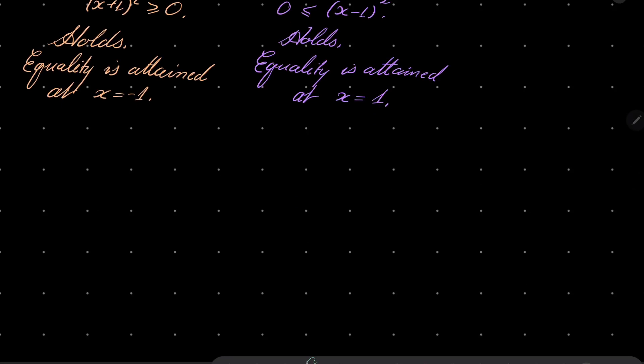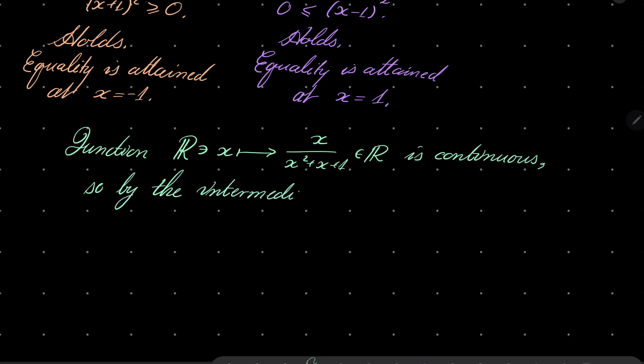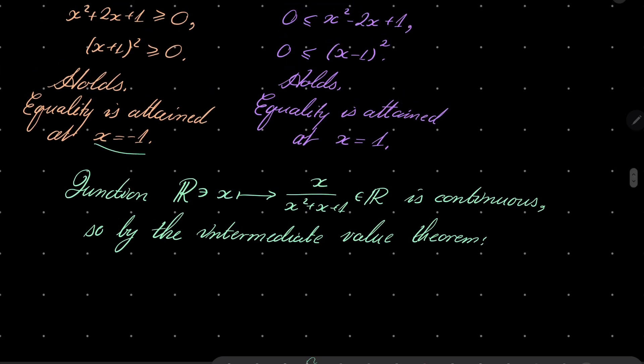Which closes the proof of part A but moreover let's notice that the function which takes a real number x and maps it to x over x squared plus x plus 1, this function is continuous, so by the intermediate value theorem...